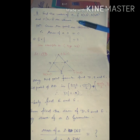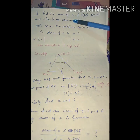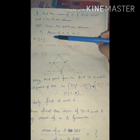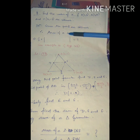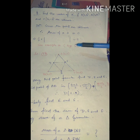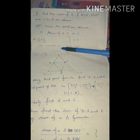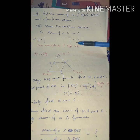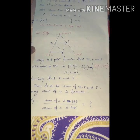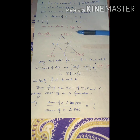Example: find the value of k if A(2,3), B(4,k), and C(6,-3) are collinear. Since the points are collinear, the area of the triangle is zero. So set half into modulus of the formula equal to zero and solve for k. This is example number 14 from page 169 of the textbook — calculate from there.